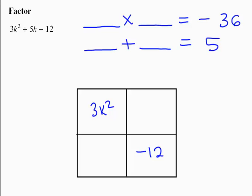So 4 and 9 are going to work for us. In order for these two to add up to positive 5, the 4 needs to be negative. So my two terms that got combined were negative 4k and 9k.